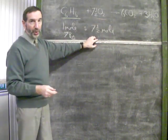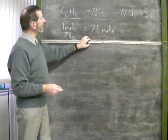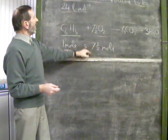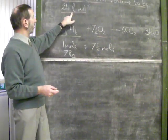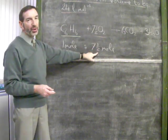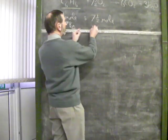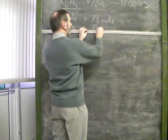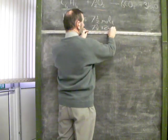Now, when it comes to the oxygen, we don't want the mass of oxygen. What we want is its volume. If 1 mole of oxygen occupies 24 litres, then we need to know what 7 and a half moles of oxygen will occupy. That will be 7 and a half times 24 litres, which comes to 180 litres.